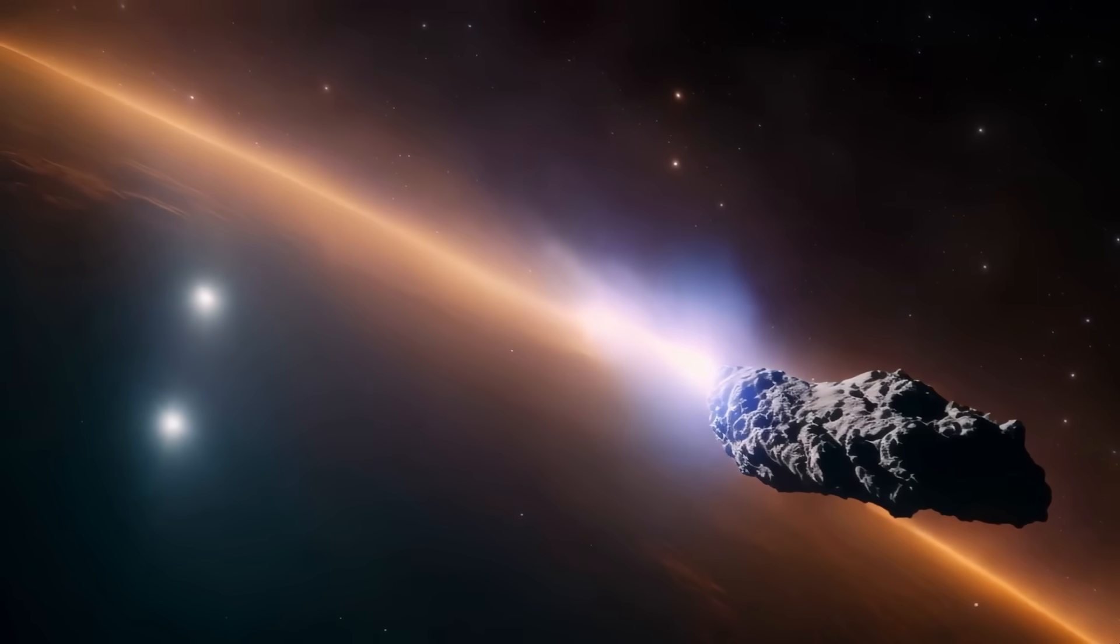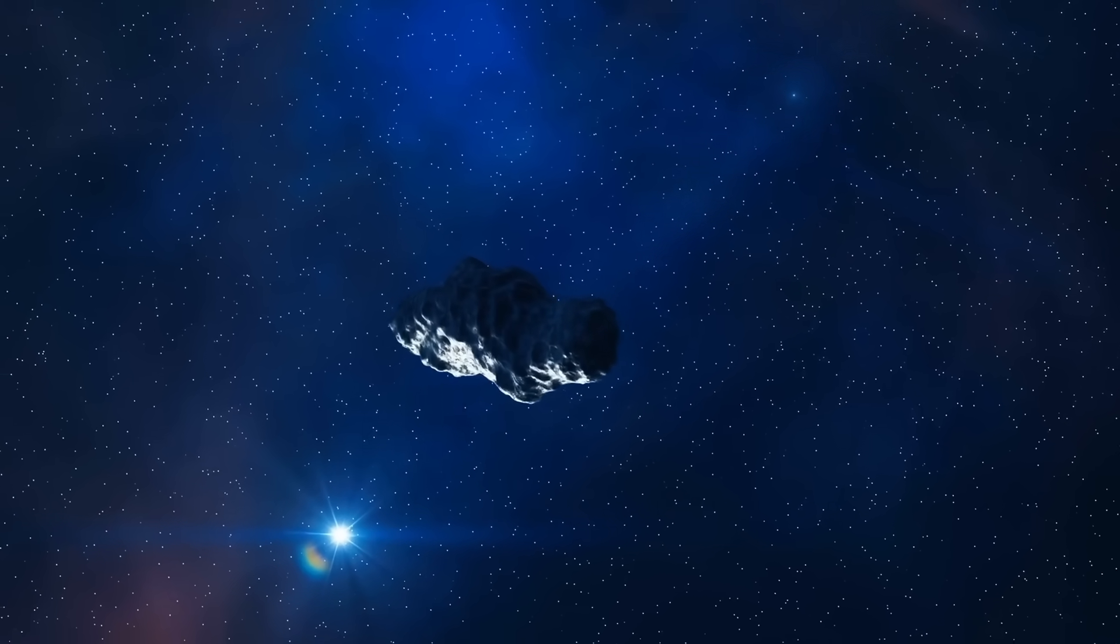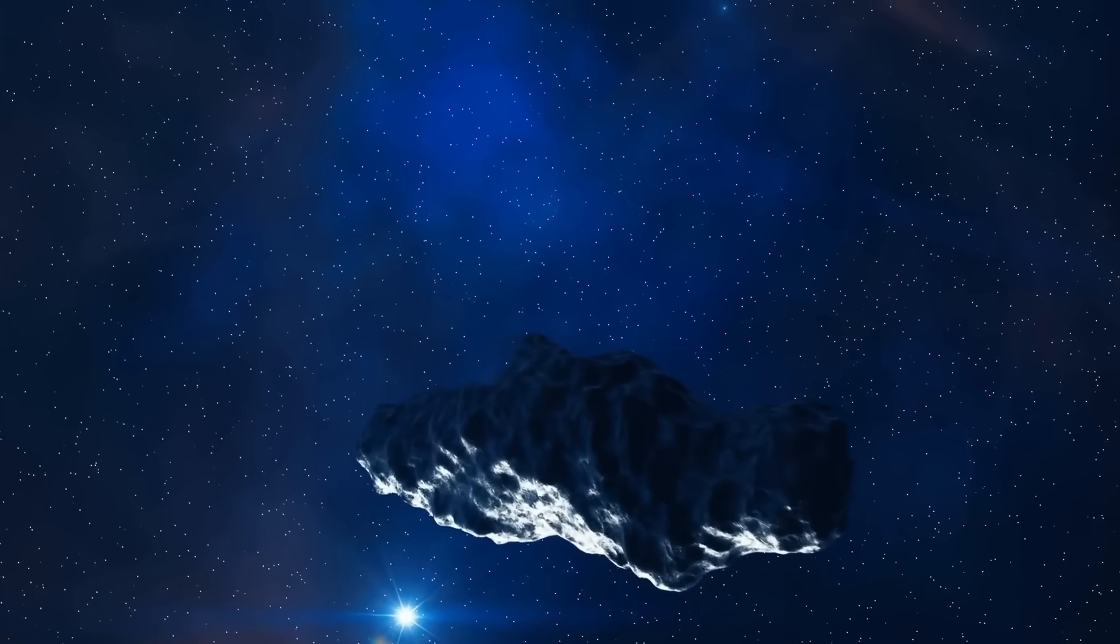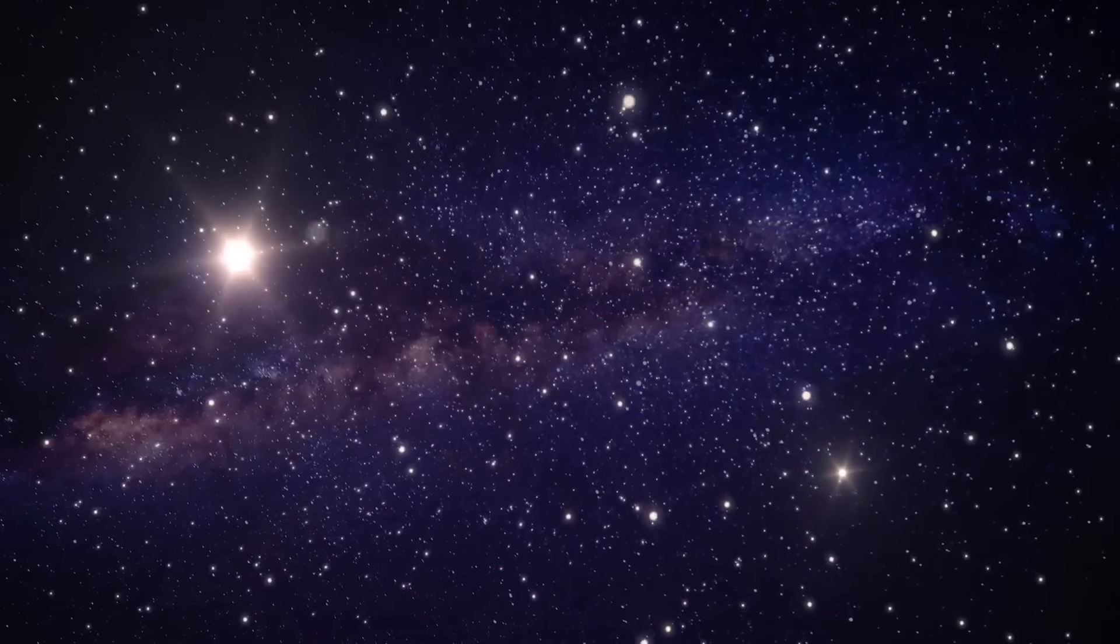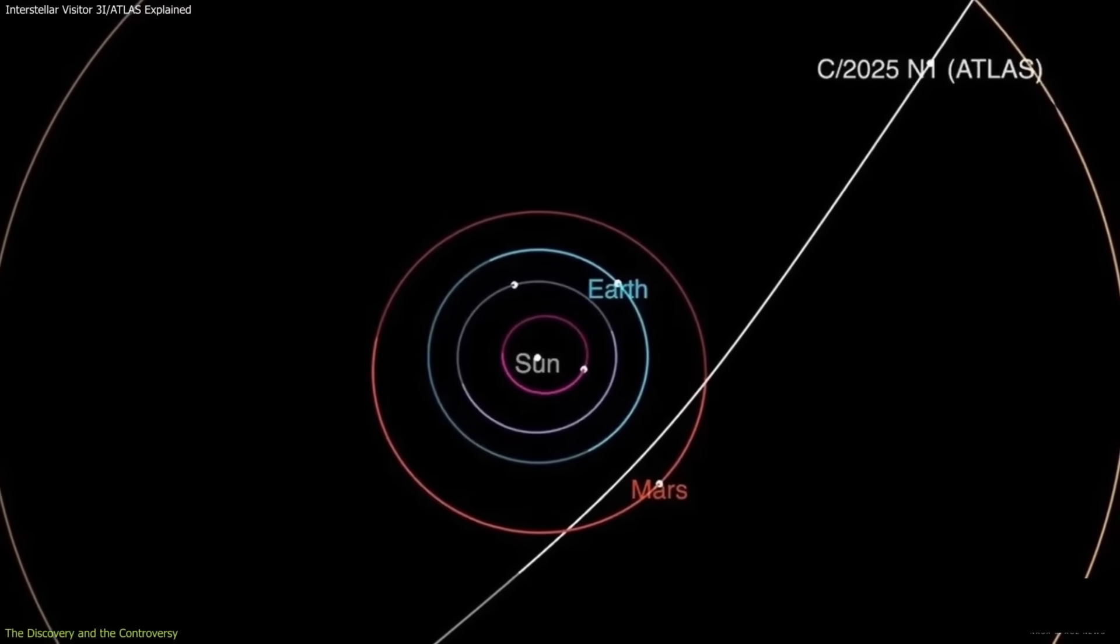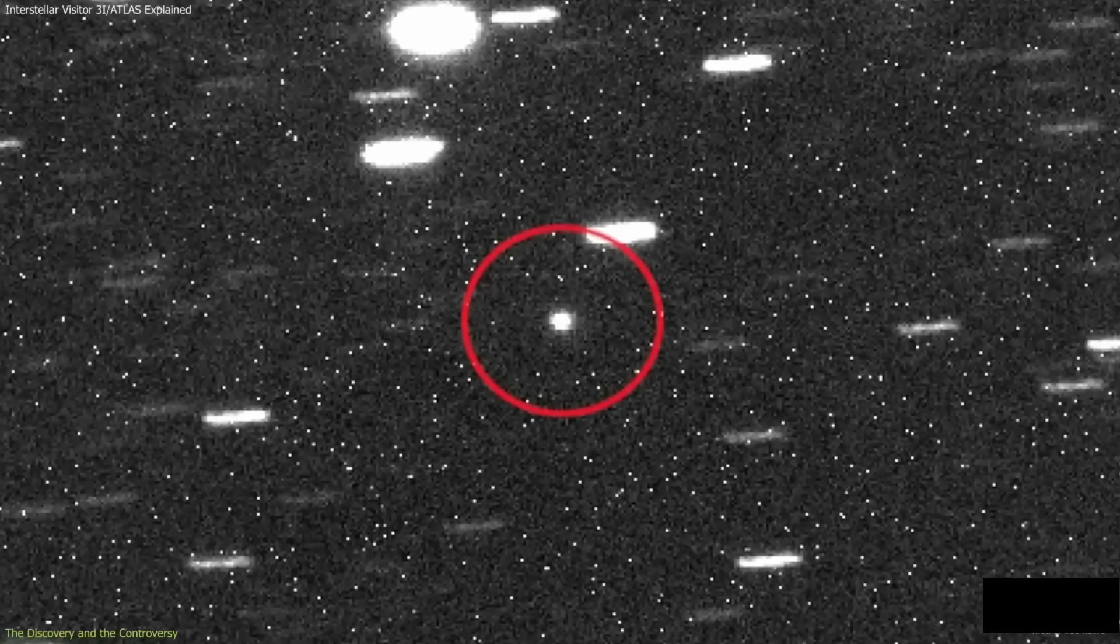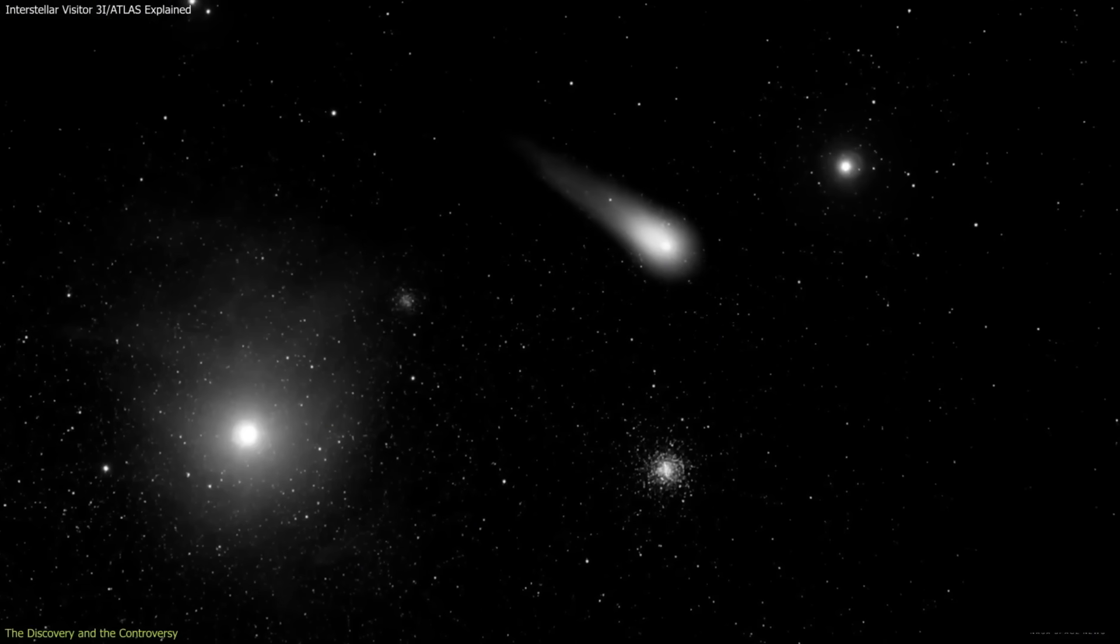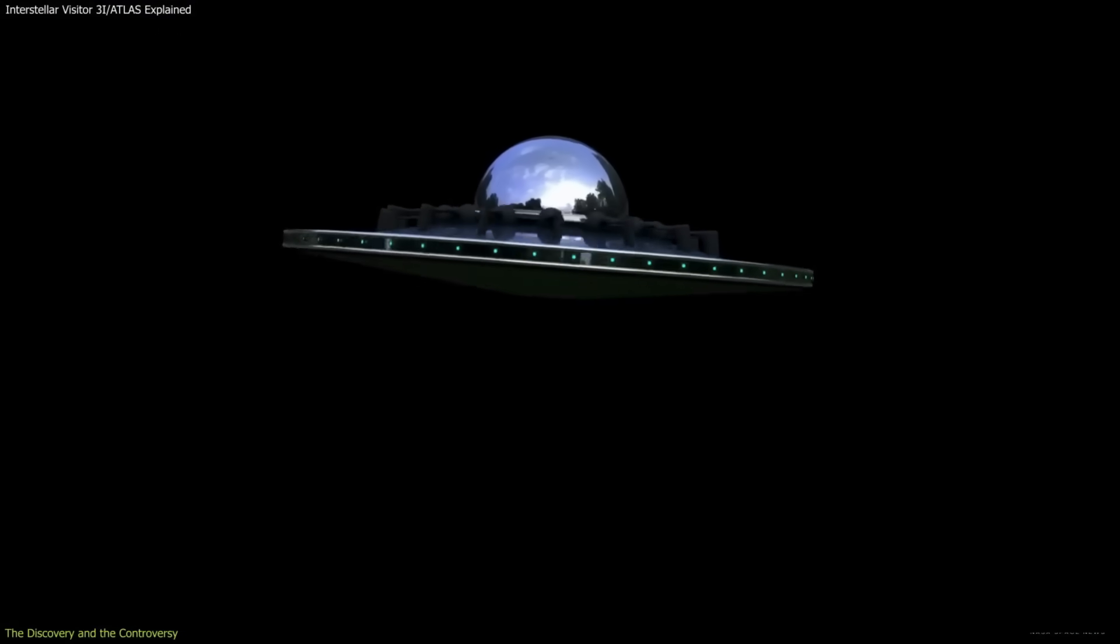Hubble soon added its own revelations. Its ultraviolet and visible light instruments revealed cyanide and dicarbon molecules at levels astronomers had never measured in a comet. These compounds are familiar enough—they glow green when excited by solar radiation. But in 3i Atlas, they overwhelmed the spectrum. Combined with Webb's infrared data, the picture became undeniable. The comet's chemistry was not just different, but extreme. If ordinary comets whisper their molecular stories, 3i Atlas shouted its alien chemistry in blazing color.